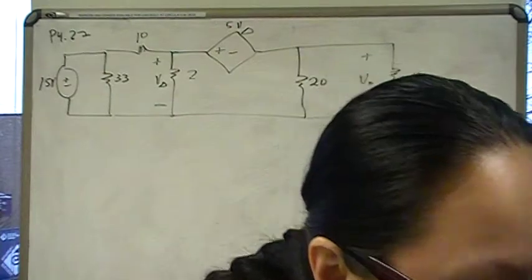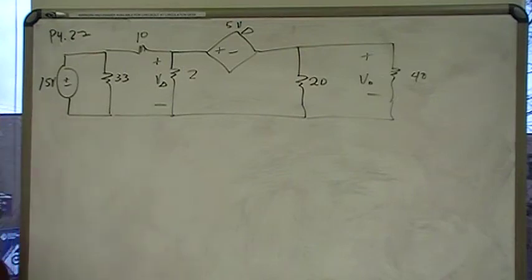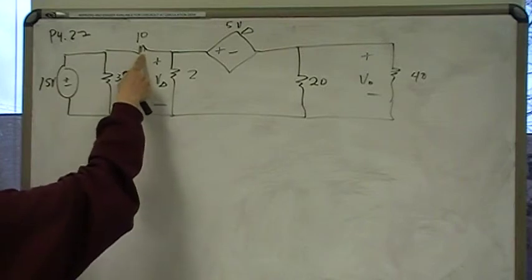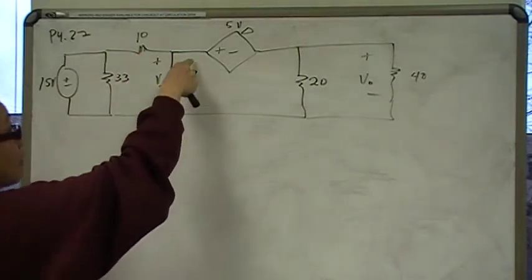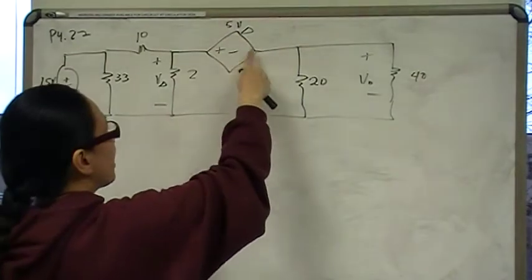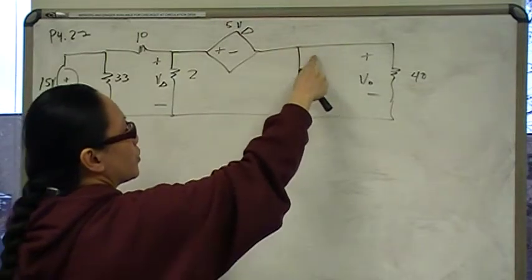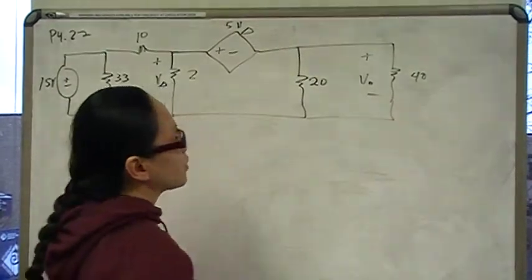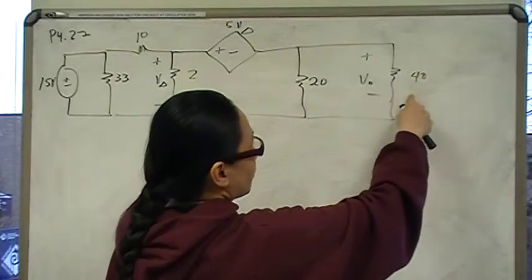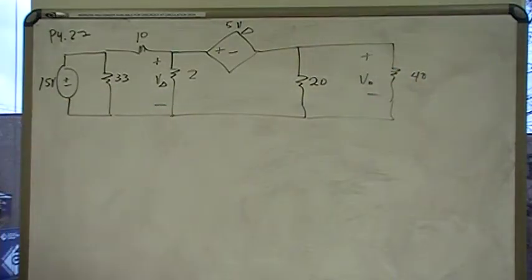First thing I need to do is find... we have a 15 volt independent voltage source in parallel with a 33 ohm resistor. We have a 10 ohm resistor there, a 2 ohm resistor there. The voltage drop across the 2 ohm resistor is called V delta and we have a dependent voltage source with a value of 5 times V delta. And we have a 2 ohm resistor here which is connected in parallel with V out, not connected in parallel, with a 40 ohm resistor and the voltage drop across the 40 ohm resistor is what we're looking for and that is V out.